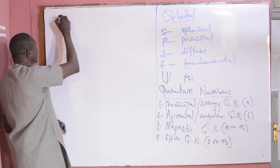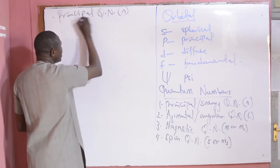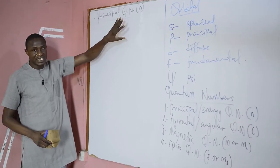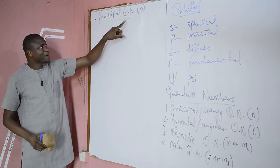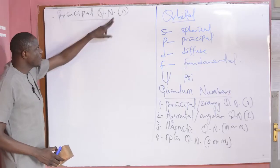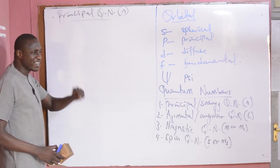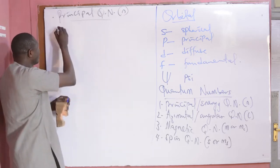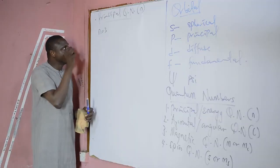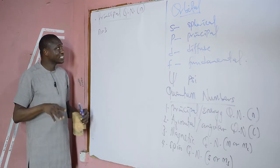The principal quantum number N signifies the size of an atom — that is, how many orbitals or shells are present in an atom. The principal quantum number also indicates the period an element belongs to in the periodic table. So the value of N indicates the number of shells that can be found in an atom. If N has a value of 3, it means the atom has 3 shells and it belongs to period 3, because the period number of an element is the same as the number of shells found in that atom.